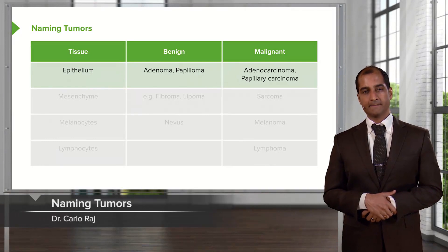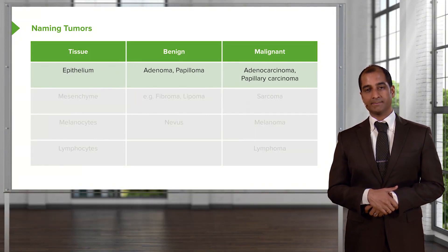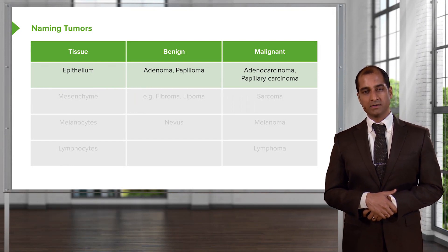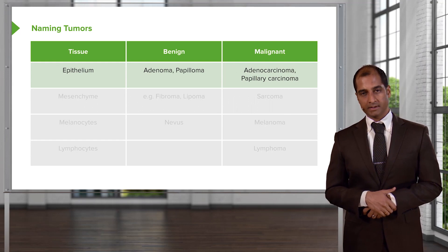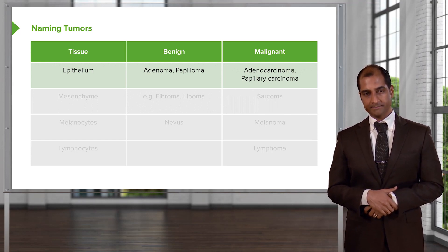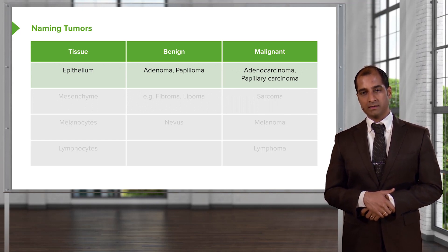Let's do naming quickly. Tissue — if it's epithelium and it's a benign type of proliferation or neoplasia, you call this an adenoma or papilloma. If epithelium goes on to malignancy, you call this cancer: adenocarcinoma or papillary carcinoma.